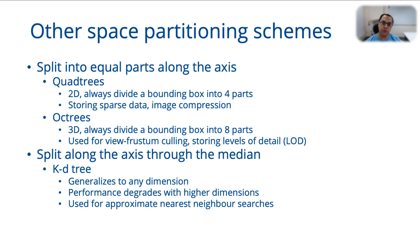When you always choose the central axial plane — for example, you create a bounding box and split along the x-axis in the middle and the y-axis in the middle — if you do it in 2D you get quadtrees, and if you do it in 3D you get octtrees. If instead of choosing the middle axial plane you choose axial planes that pass through the median, then you get what are known as KD trees, and each one of these has different uses.